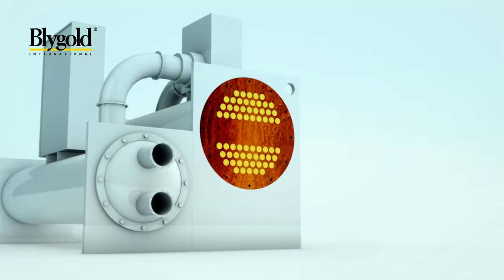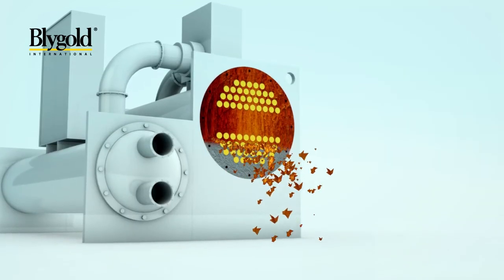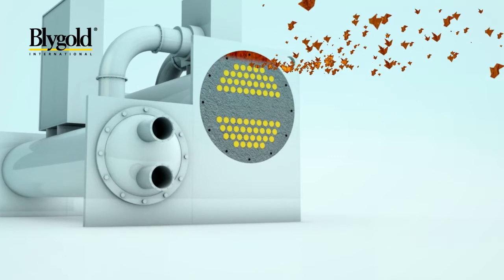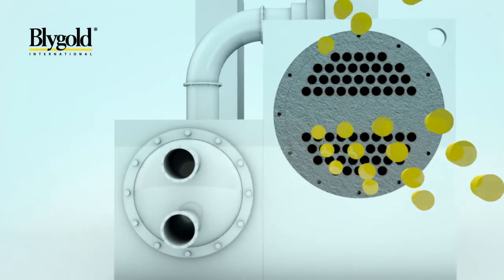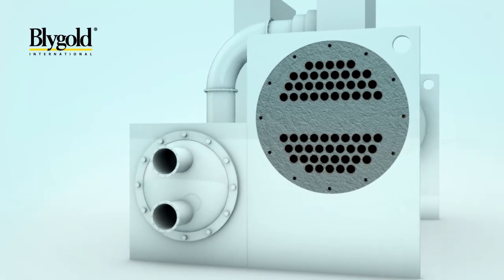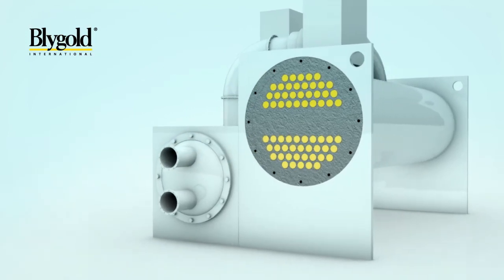After taking necessary measures to protect the tubes and the environment around the chiller, the target surfaces are blasted. The surface profile and cleanliness are checked and the tubes are plugged to prevent any material from entering them.